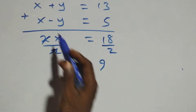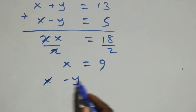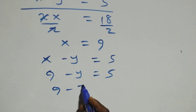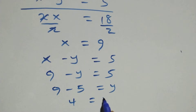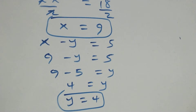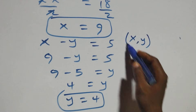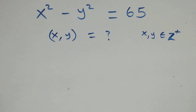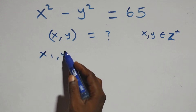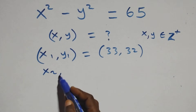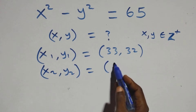To find y, we use the second equation x−y = 5. Substituting x = 9: 9−y = 5, so y = 9−5 = 4, which implies y = 4. The second solution is (x, y) = (9, 4). In total we have two solution sets: (x₁, y₁) = (33, 32) and (x₂, y₂) = (9, 4).